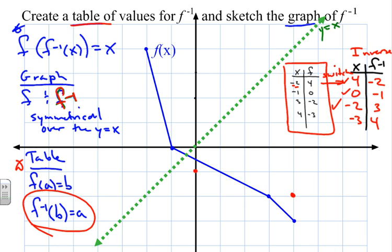Negative 2 and 3, which would be right there. Check. And then negative 3 and 4. It's right there. And check.